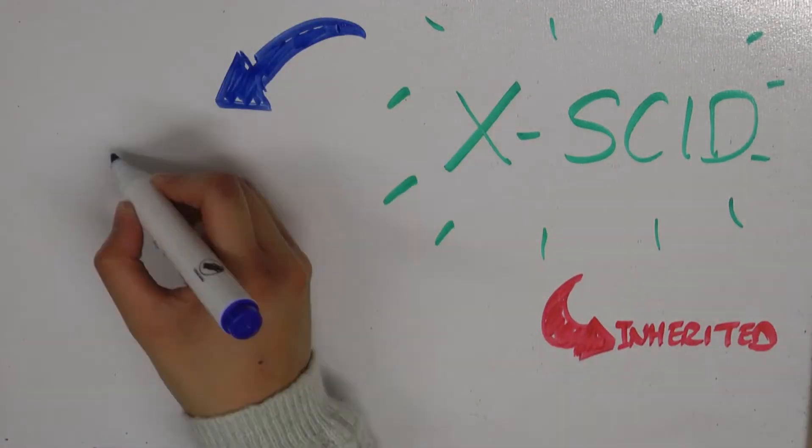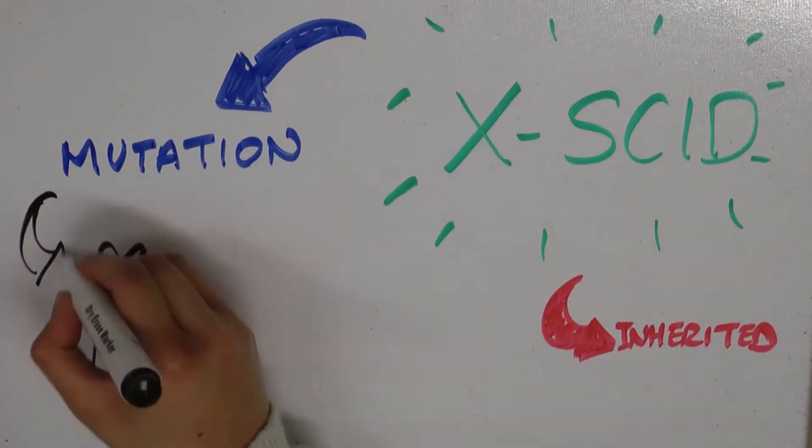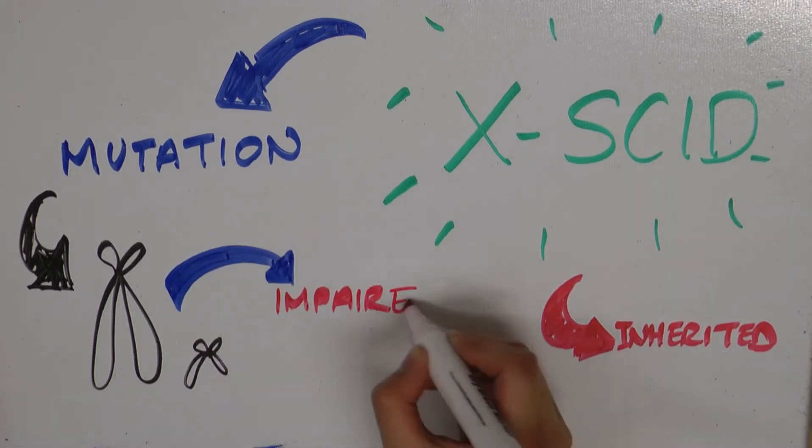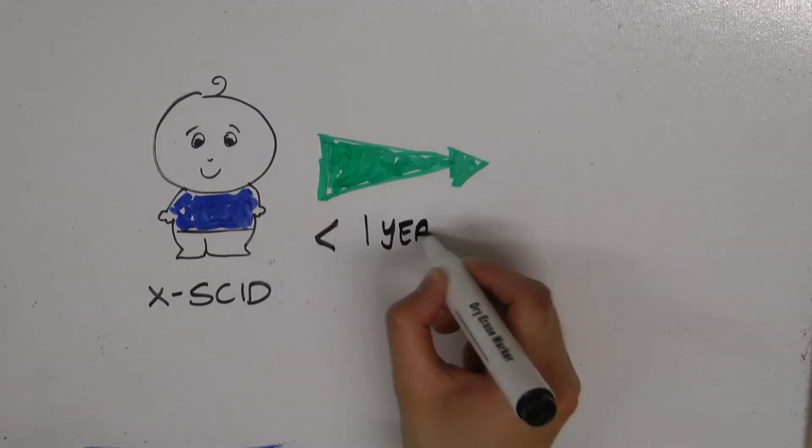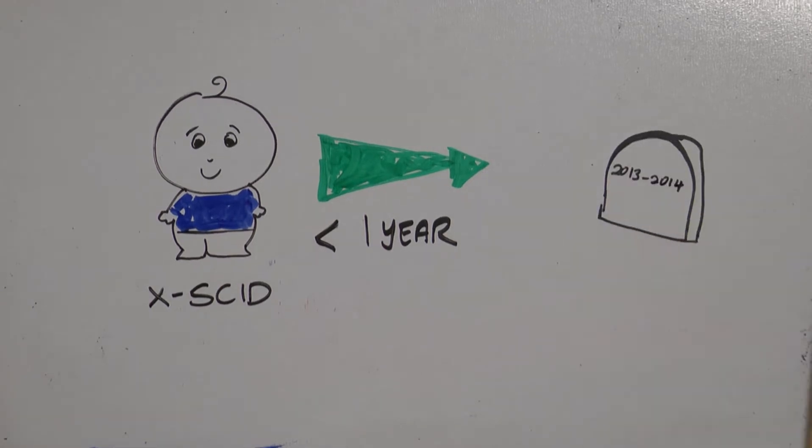It is an inherited disease carried on the X-chromosome which results in severely impaired immune system. Without treatment, infants would die within a year of birth due to even a benign viral infection.